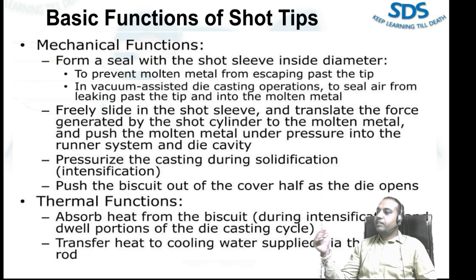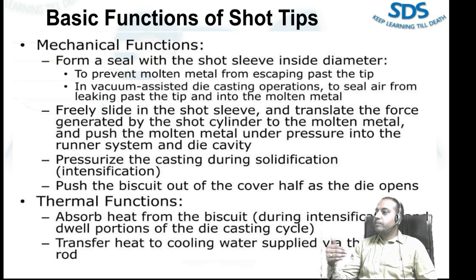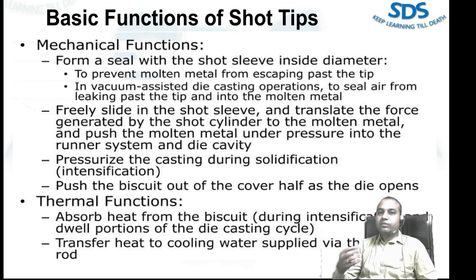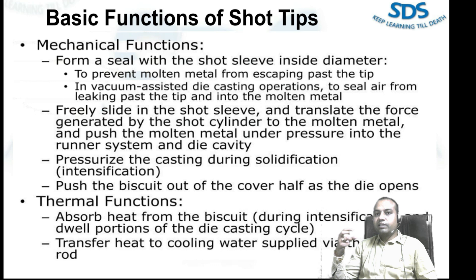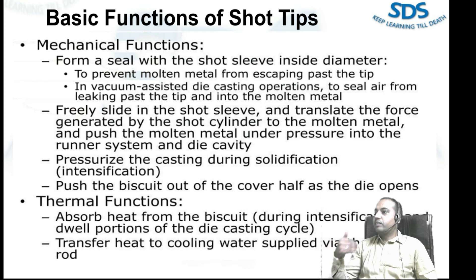Regarding the thermal function: we absorb heat from the biscuit during the intensification and dwell portion of the die casting cycle, and transfer that heat to cooling water supplied through the plunger rod. The heat of the biscuit thickness is transferred — we use bubblers, and the water flows through the pipe so the heat can be transferred effectively.